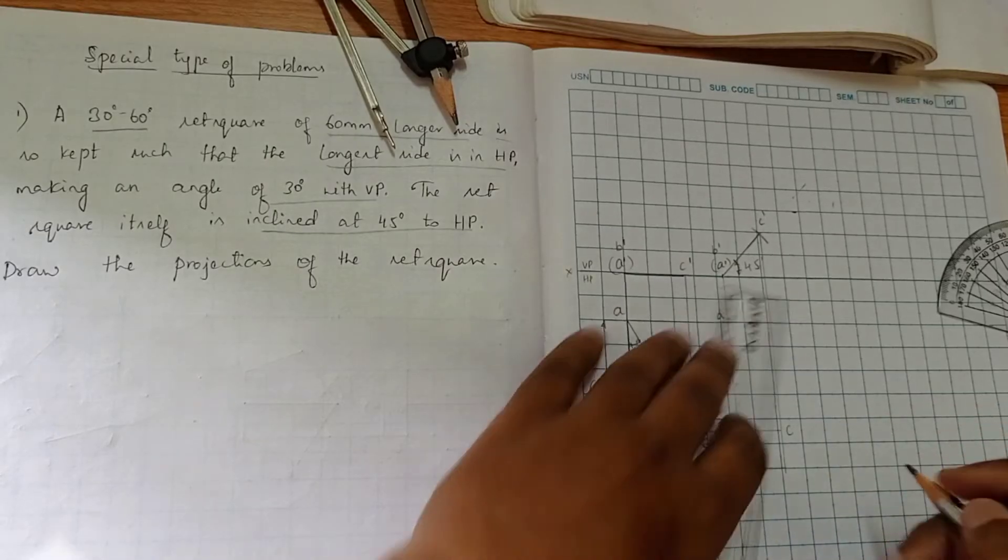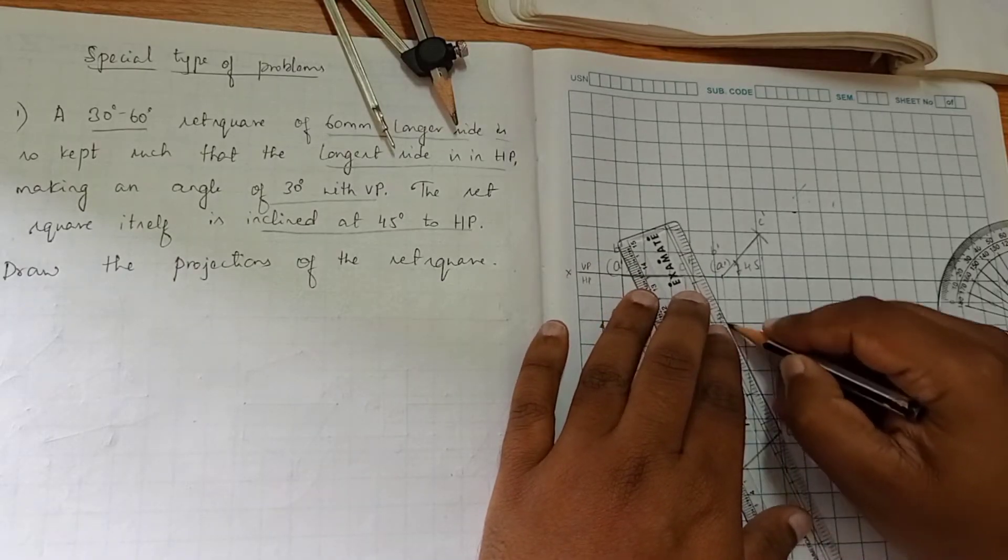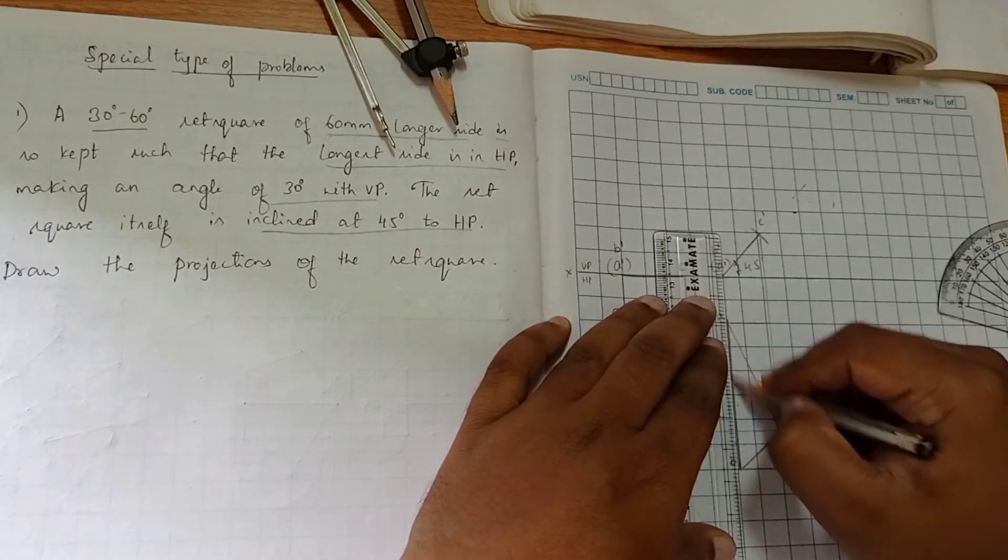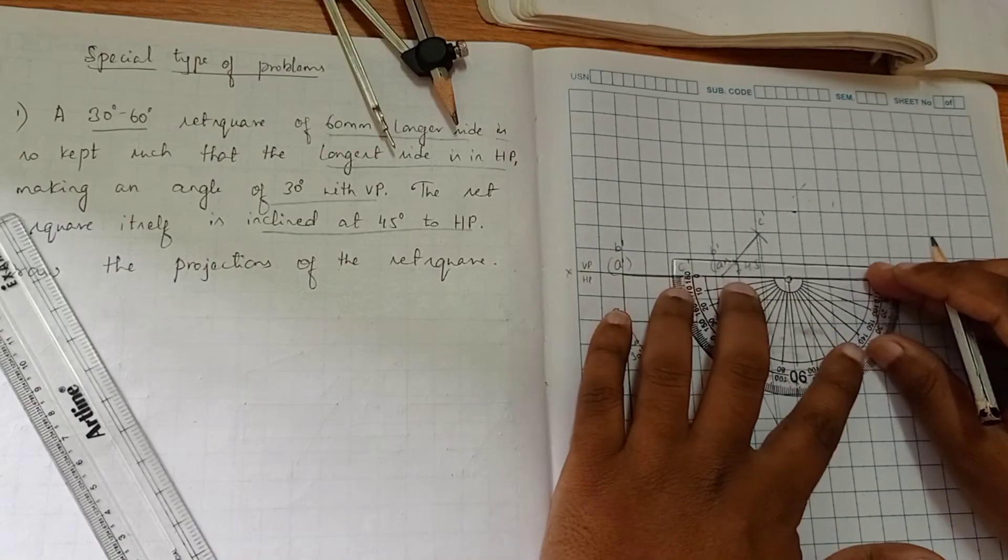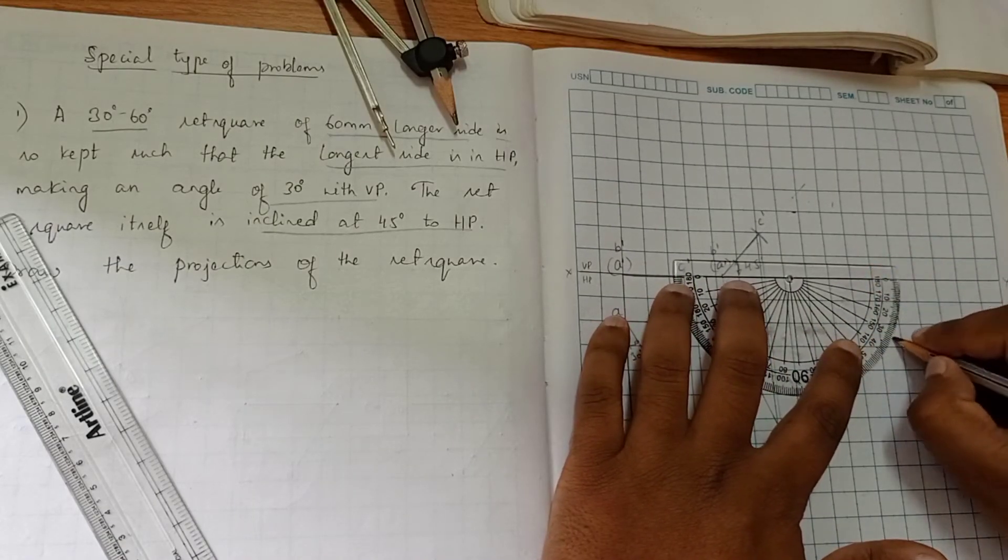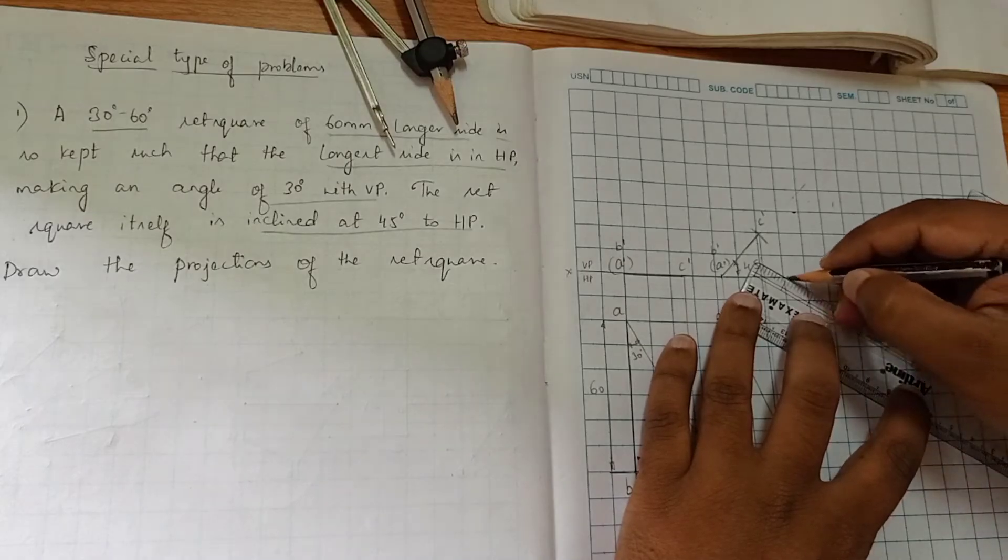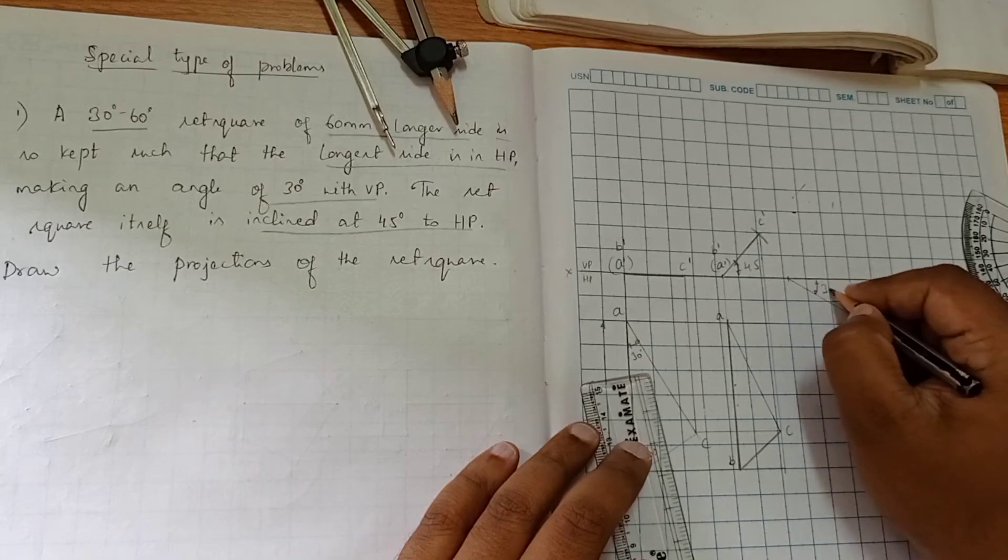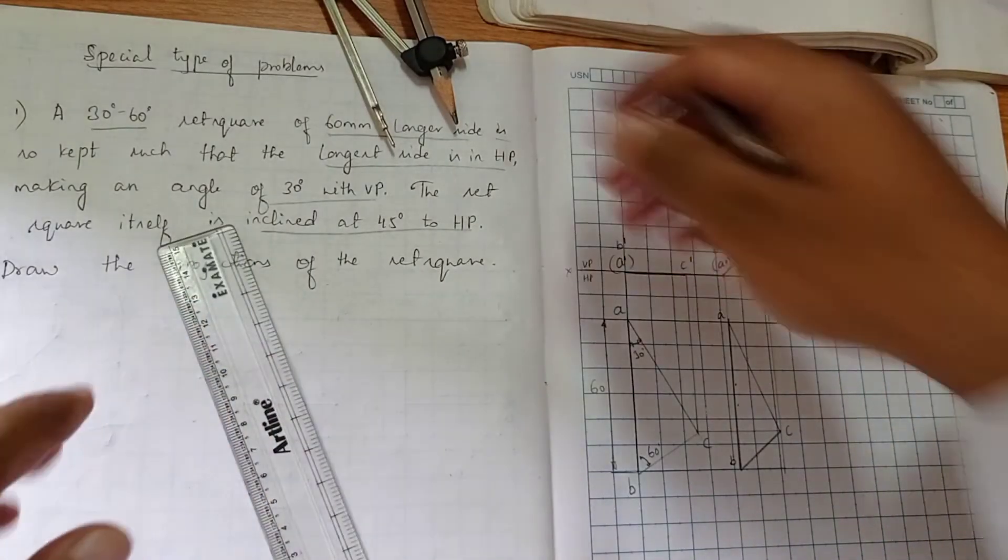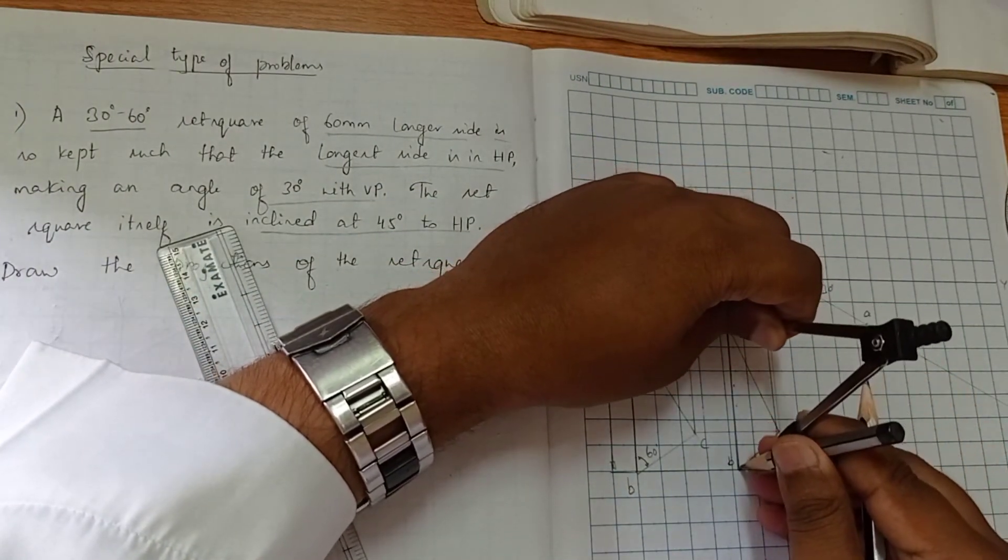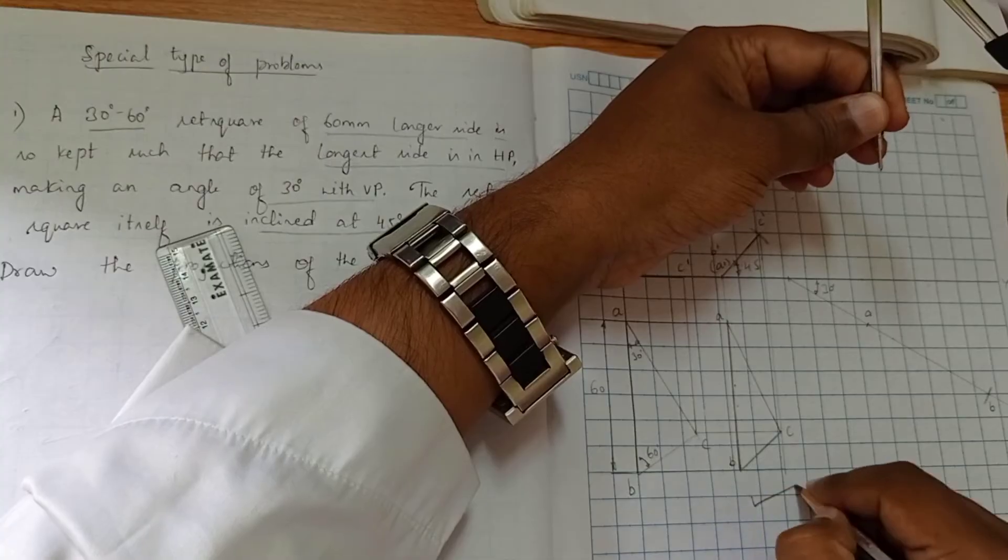And this point is B, and this point is C. So we will join it. Now we have to draw the third projection - that is inclination to VP. It is 30 degrees, marking a reference point. So this is 30 degrees. After this we have to mark reference point. So from A to B we have to measure, we have to copy this diagram over here. So this is the diagram we are copying.